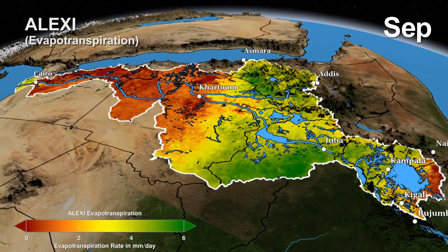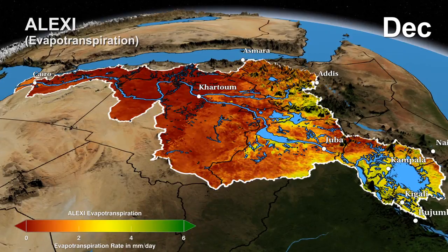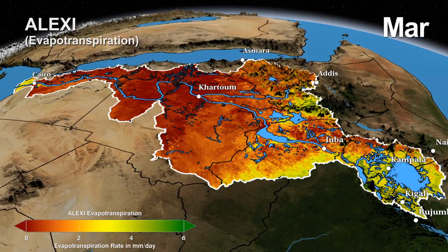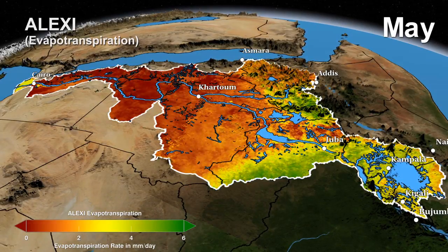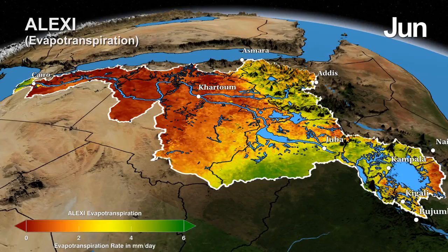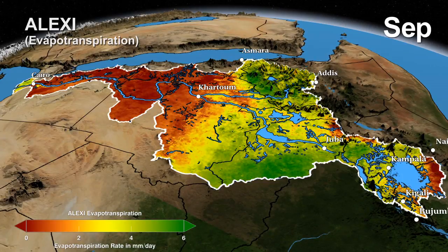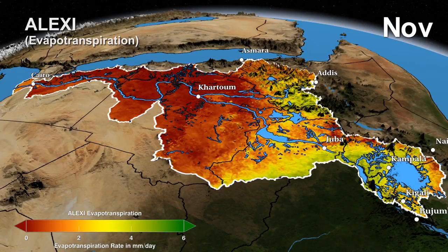This map of evapotranspiration, developed by USDA scientists, shows an unprecedented daily measurement of both evaporation from the soil and water released by plants, or transpiration.